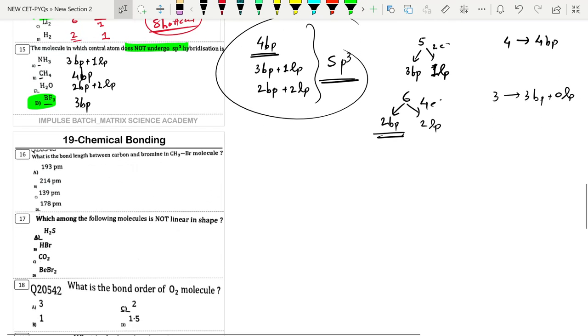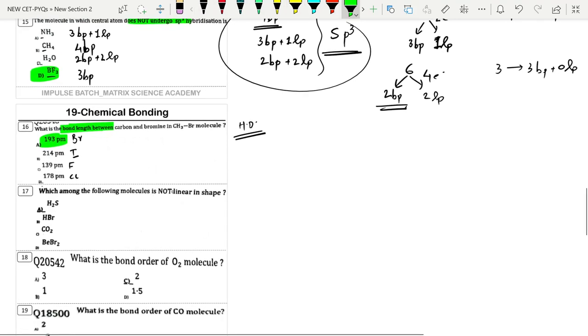CH3Br bond length. Again this is from halogen derivatives. As mentioned earlier, fluorine has the least at 139, then 178 for Cl, 193 for Br, and iodine is 214. For Br we are asking, so option A will be the correct option.